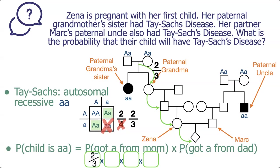We enter two out of three into the first square of our equation. Going from the paternal grandma to Xena's father is a one out of two chance, since we're diploid — either the big A or little a is passed on. Transferring from Xena's father to Xena is also one out of two, and from Xena to the child is one out of two. That completes the probability that the child got a little a from mom.